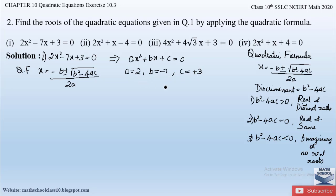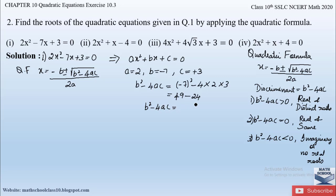Using these values, let us first determine the discriminant value, b² - 4ac. Knowing the discriminant tells us what type of roots we will obtain. So b² - 4ac = (-7)² - 4(2)(3) = 49 - 24 = 25, which is greater than 0.